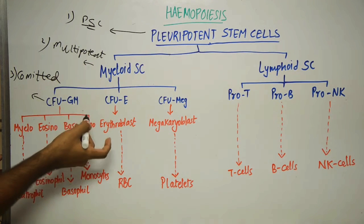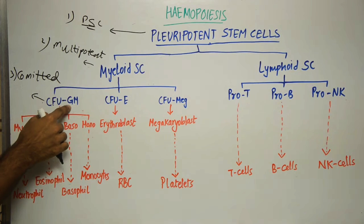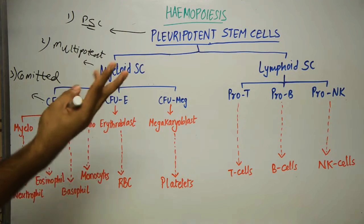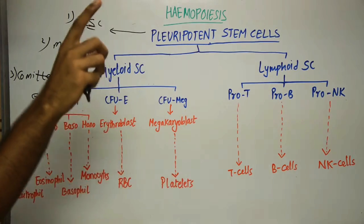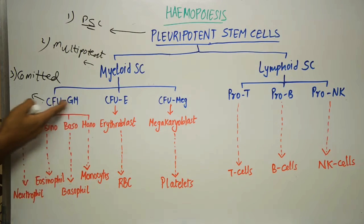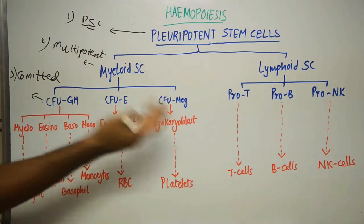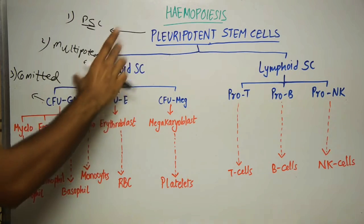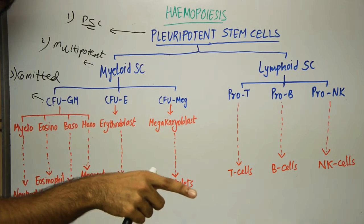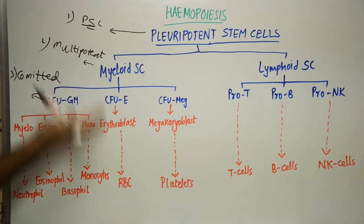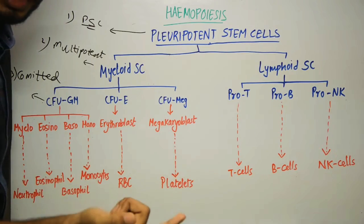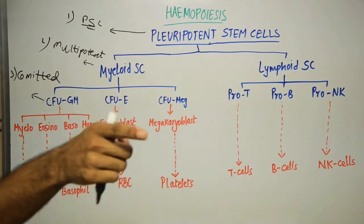Coming to CFU granulocyte-monocyte: as the name suggests, they give rise to granulocytes, but not directly — they first form blast cells, which is the fourth series. In the diagram, the blue color represents stem cells (the first three series), while red indicates specialized or differentiated cells below that level. Those lower cells are not stem cells; they are specialized or differentiated cells.